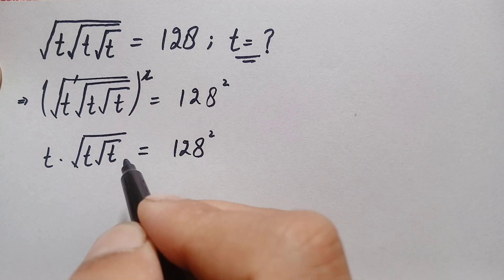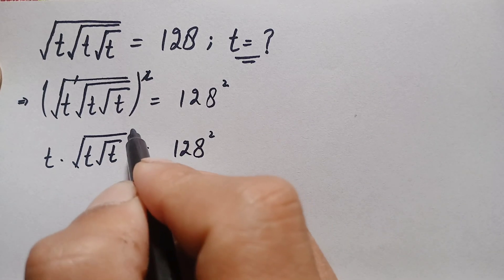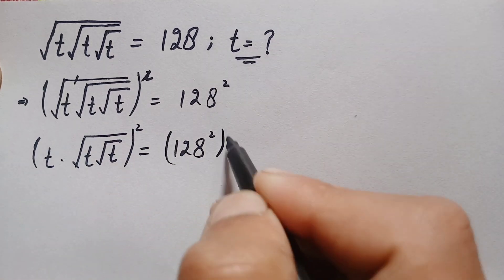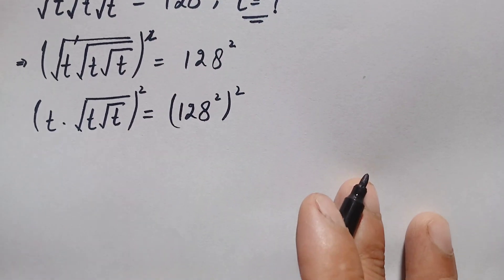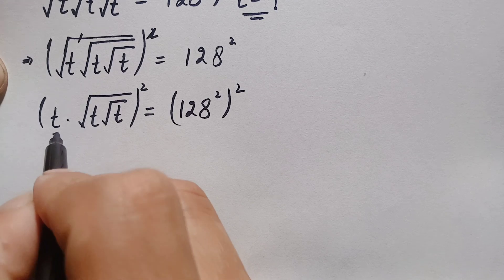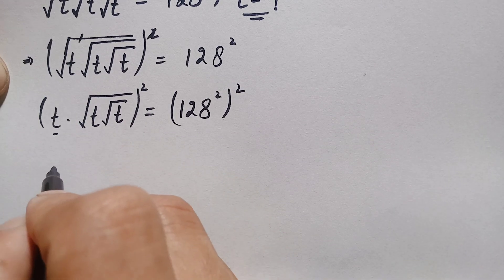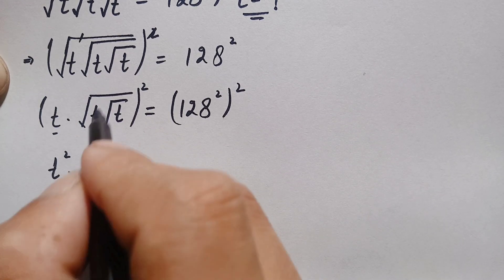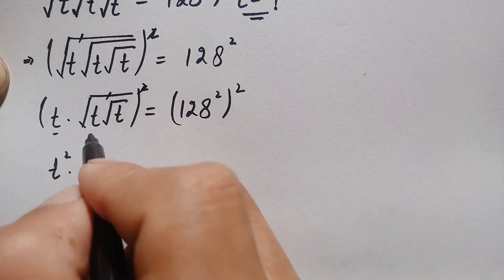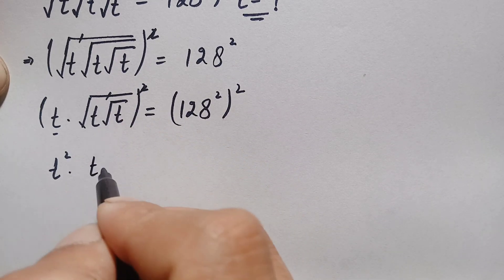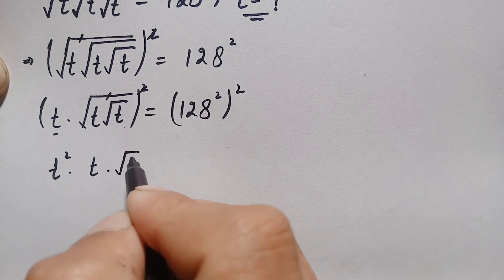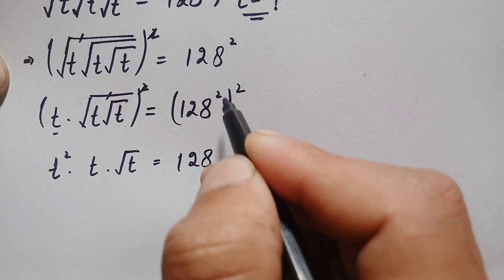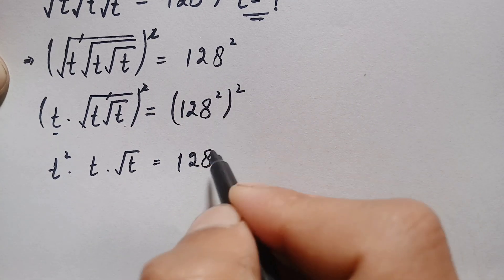So again we will take the square on both sides. Taking the square over t and the remaining expression: this square and the square root cancel, and on the right-hand side we multiply the powers — 4 times 2 gives the exponent, so this will become t squared times t times the square root of t, is equal to 128 to the power 4.